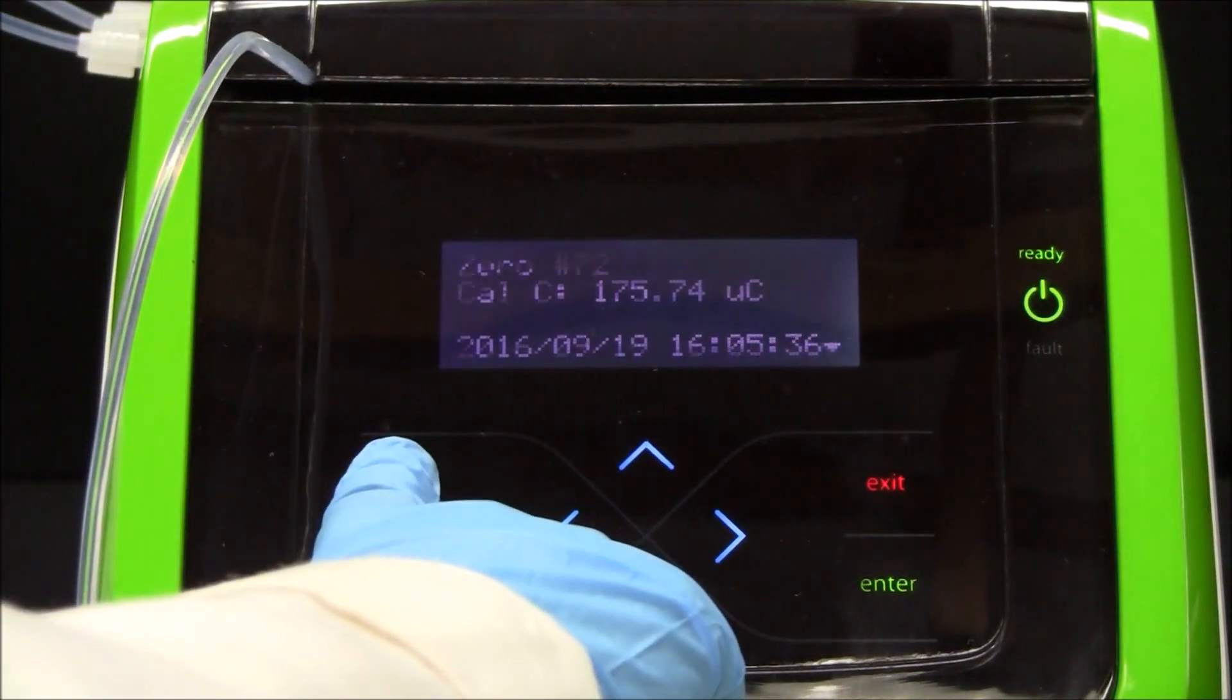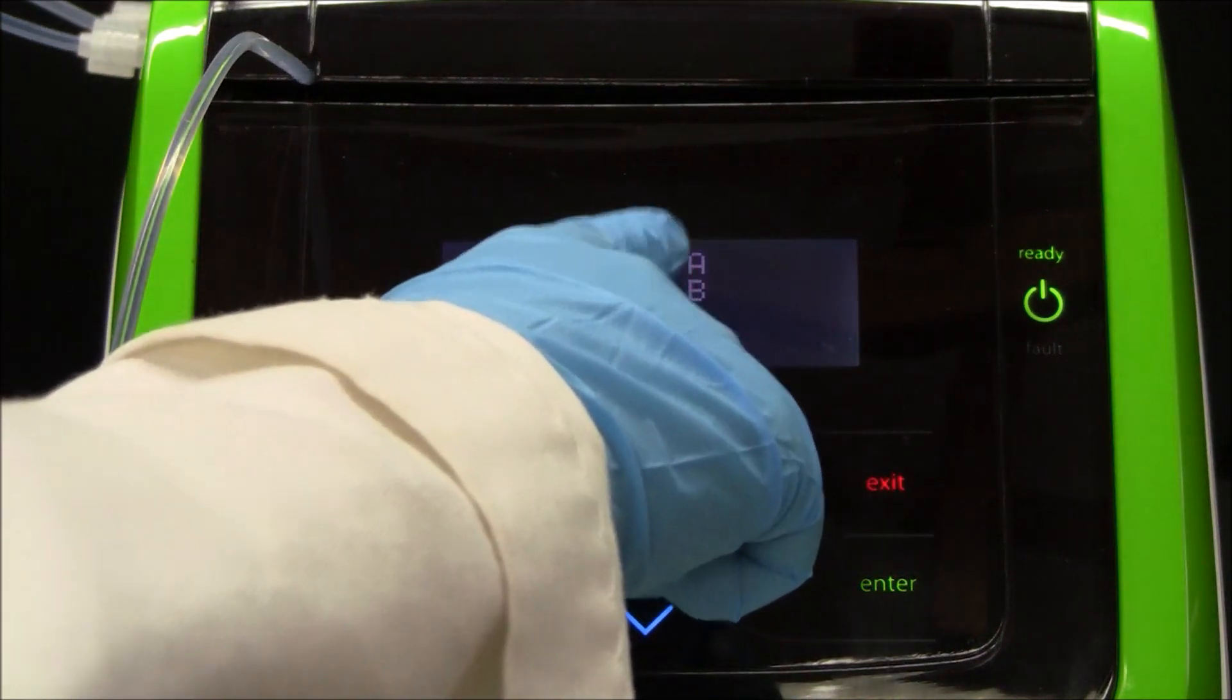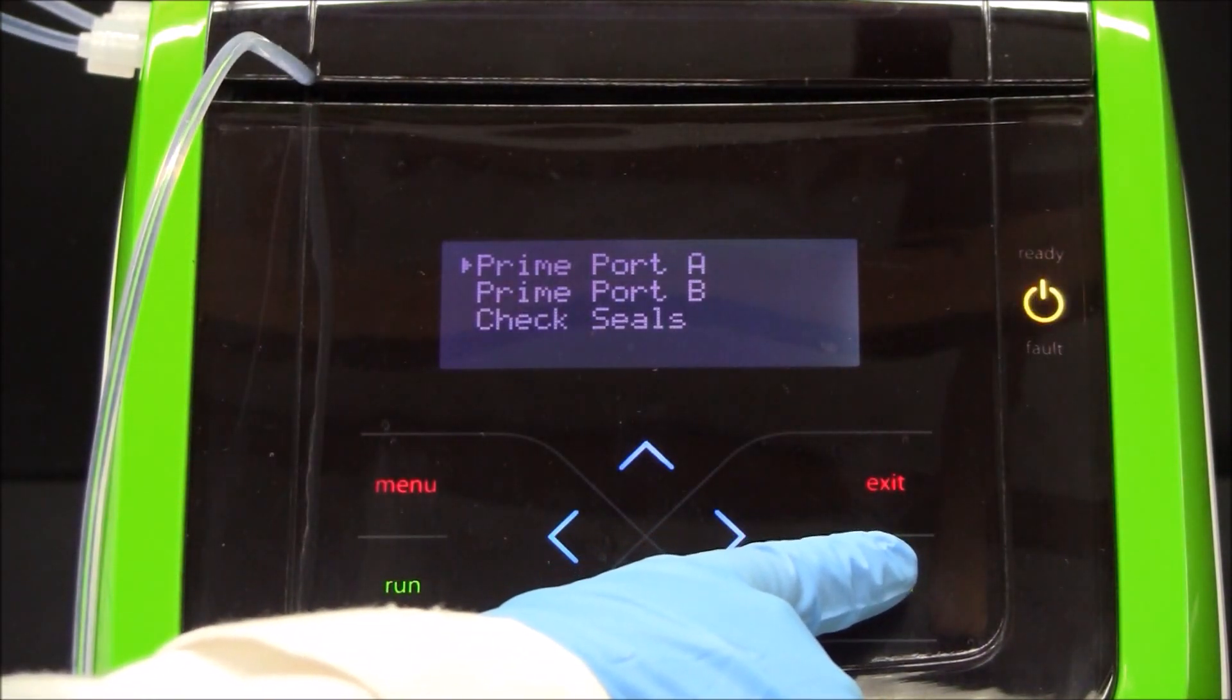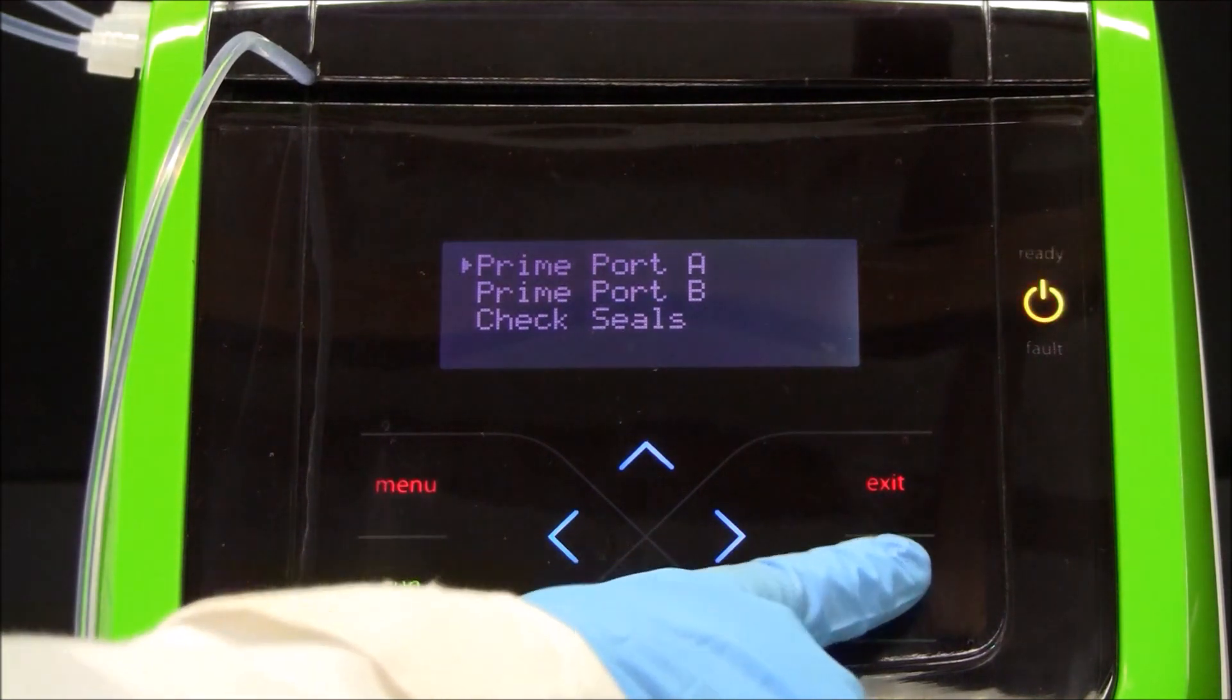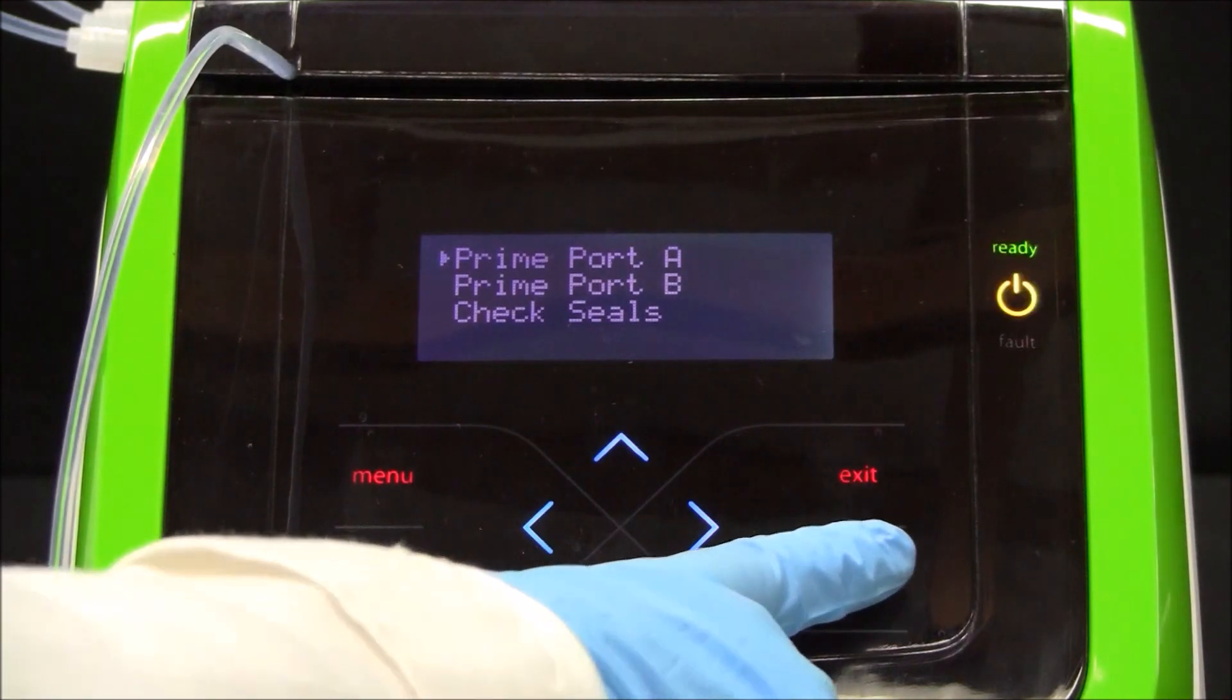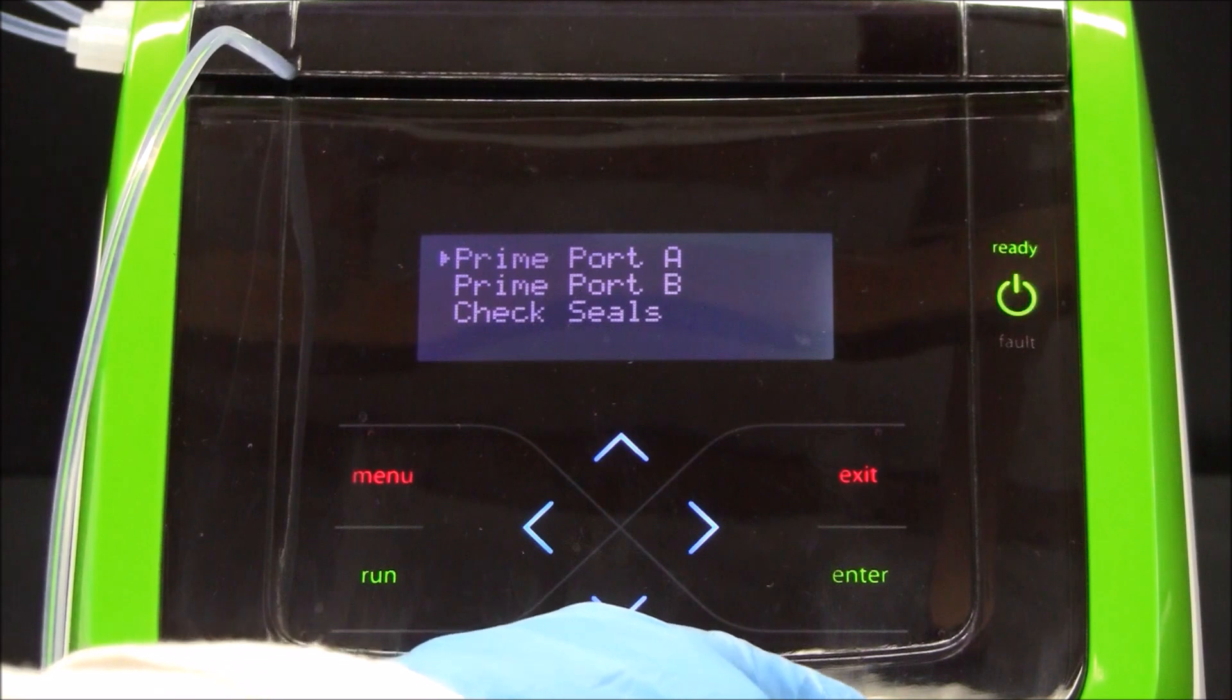In the operation menu, select prime lines. Prime port A three times to fill it with the sample. By the third prime, there should be a strong flow coming out of the waste port.